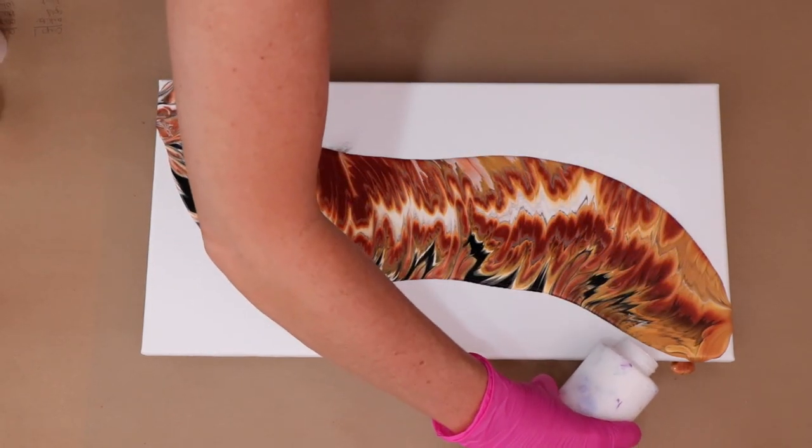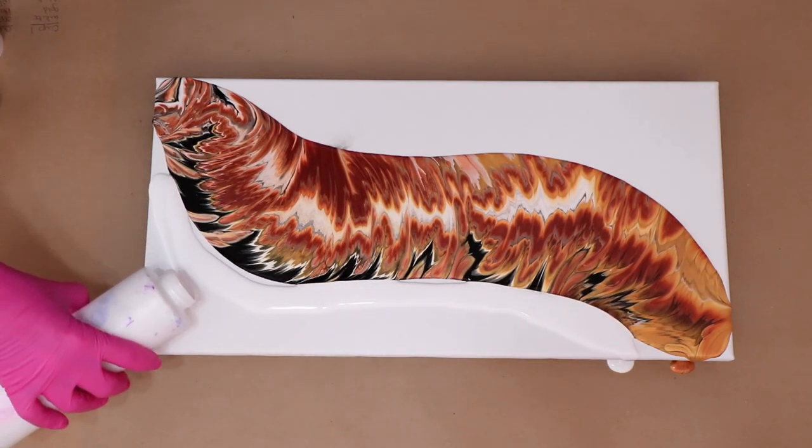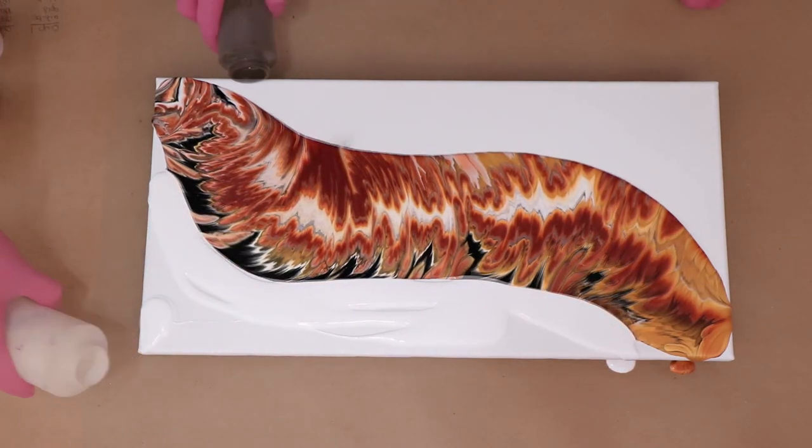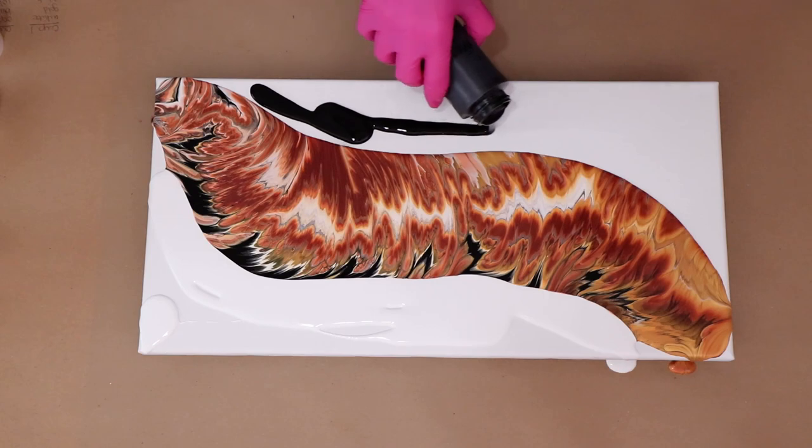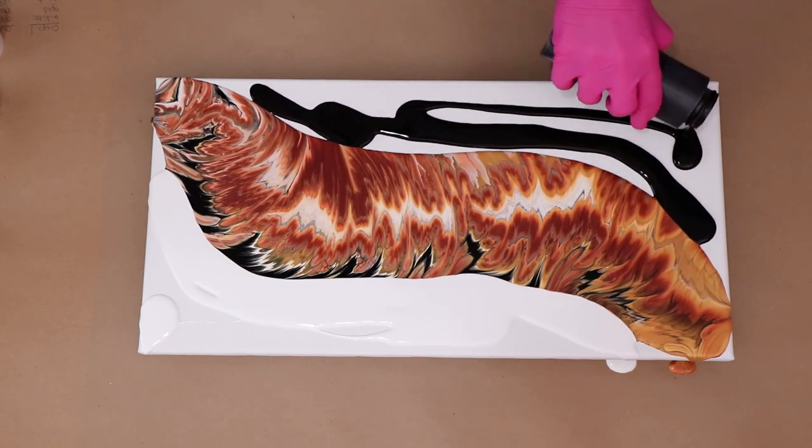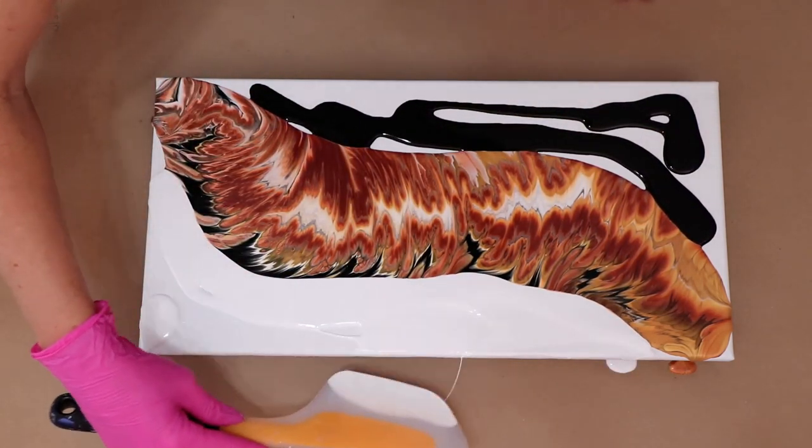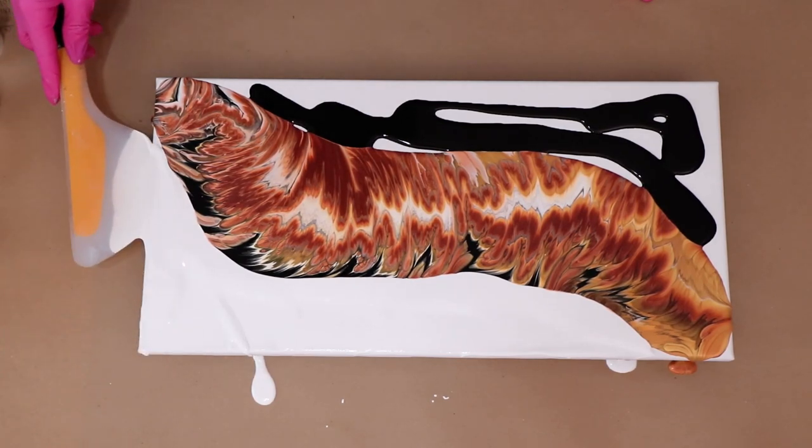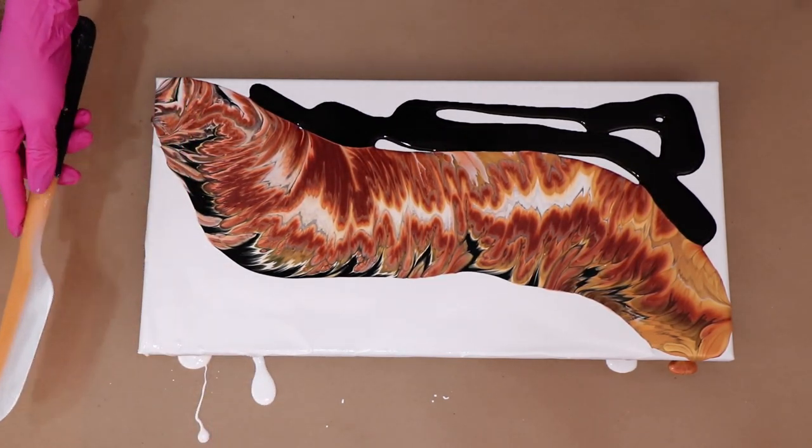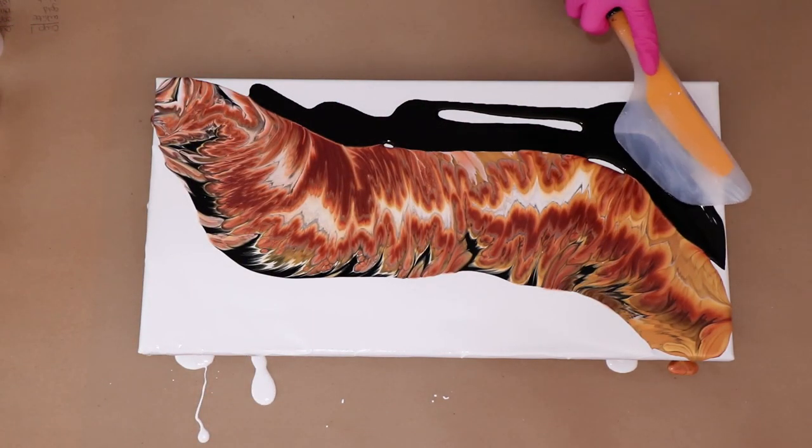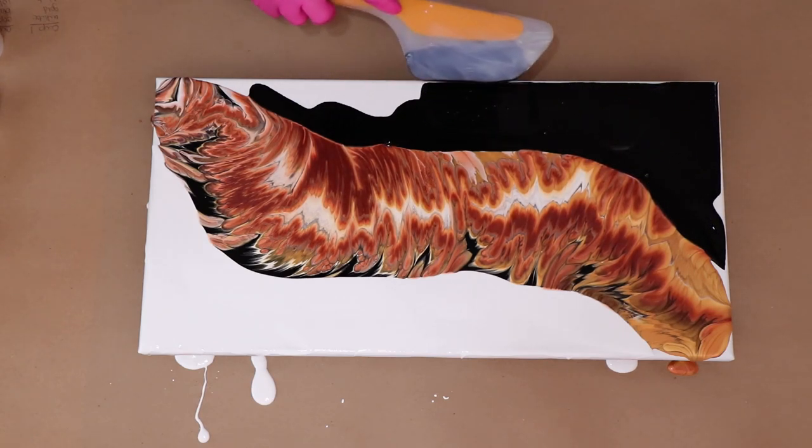Now I'm going to add some white, which is the Artist Loft White. I'm hoping maybe for a little negative space. And then I decided to maybe put a little black, the Liquitex Mars Black. I'm going to use my spatula. Spread it out. And it's magic, it's clean. So now I can spread the black. It's my favorite spatula to use.